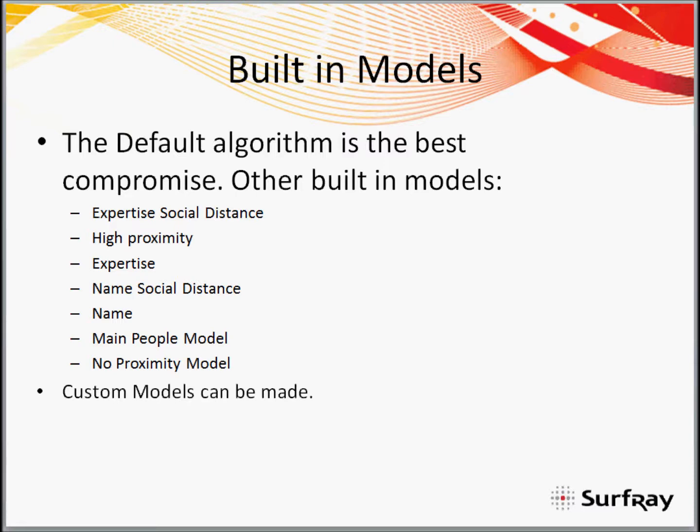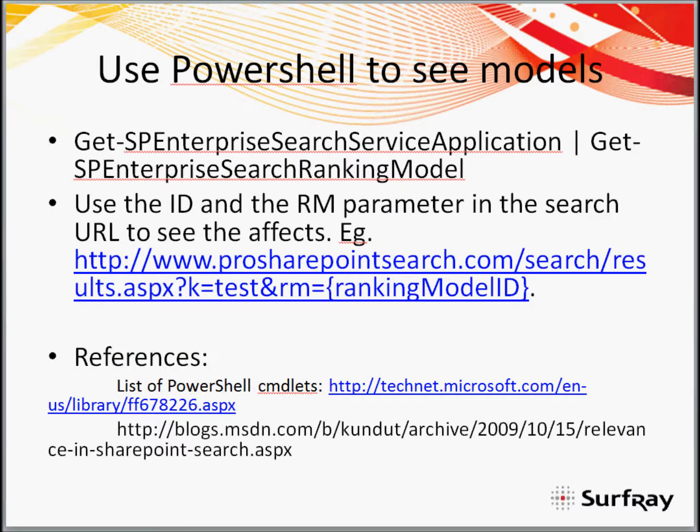If you want to know more about the details of the ranking algorithm, please do pick up our book. Custom models can also be made. To use these, we really need PowerShell to see those models — you can also call this from the object model, and a blog post in the references talks about how to do that. After seeing the ranking algorithm, we can test them out to see what difference they make. To do that, we just need the ID and use the RM parameter in the URL. If we want more permanent use, we can modify the web part to always use that particular ranking model.